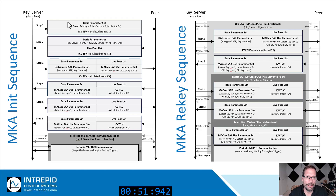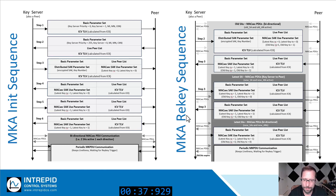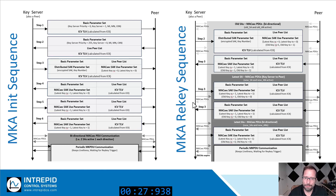MKPDUs are sent in various sequences during boot-up to quickly initialize all PHYs with an ephemeral SAK. New SAKs need to be generated by the key server and distributed across the network to participants in a re-key event, triggered by a packet number rollover or other triggers. Here we can have more than one SAK active at one time so that MACSEC PDU transmission and reception goes uninterrupted.